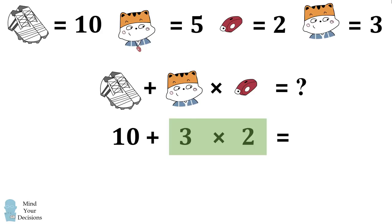Now in order to get the correct value, we have to use the order of operations and correctly evaluate 3 times 2 first. Multiplication takes precedence over addition. So we have 10 plus 3 times 2, which is 10 plus 6, and that gives us the correct answer of 16.